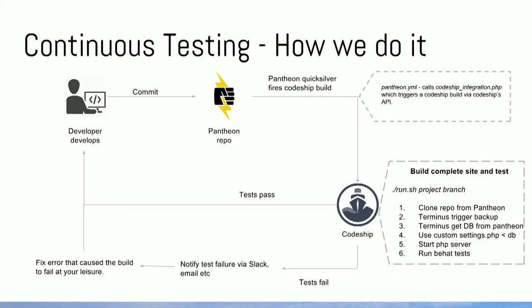A little diagram of that. This time we're working directly on the Pantheon branch — whatever it may be, develop or a multi-dev branch. You make a commit and we use Pantheon's Quicksilver hook, which allows you to run anything you want on certain actions in the Pantheon repo. In this case we run a command that calls a PHP script which then triggers a CodeShip build. We've already set up a CodeShip project ready to go, so the Pantheon commit fires off a command to run that CodeShip build. If tests pass, nothing happens — deployment is still handled by the developer. However, if tests fail, they get notified by whatever means you want: Slack, email, or anything you desire.